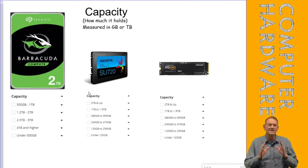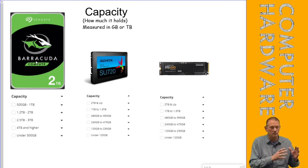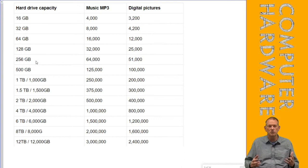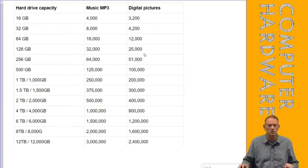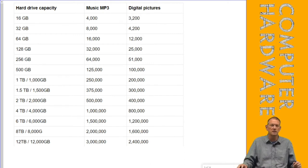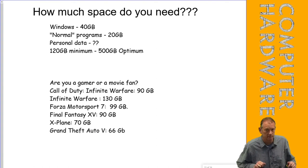Back to capacity — on the traditional 3.5-inch drive, capacities get bigger than solid state drives initially, though SSDs have grown larger and larger over time. This overview chart shows what capacity means in practice: a 16 GB flash drive holds about 4,000 MP3 songs, while a 12 TB drive can hold around 3 million. For digital pictures, that's 3,200 versus 2.4 million. The bigger the drive, the more you can store — that's why capacity matters.